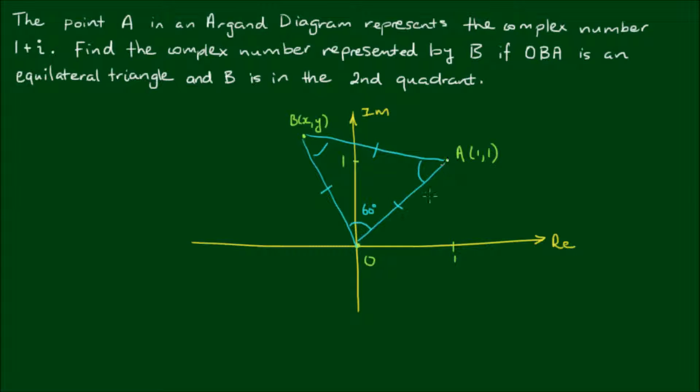Well, since we know what A is, I can represent it using a vector from the origin, which I'm drawing in purple. And I'll call this vector Z1.